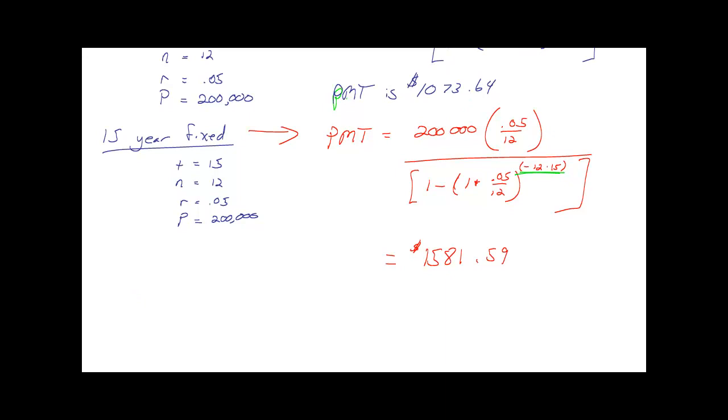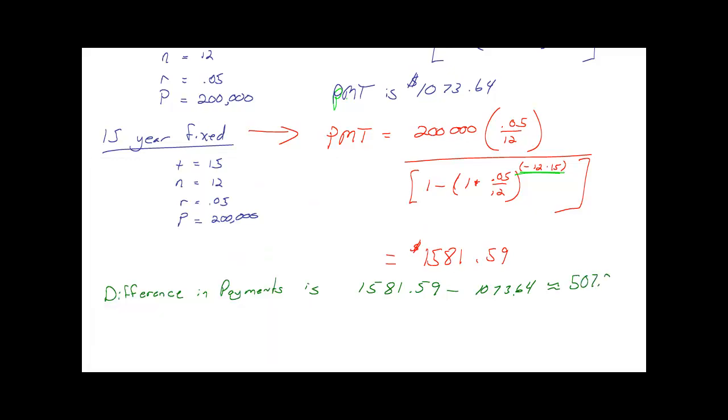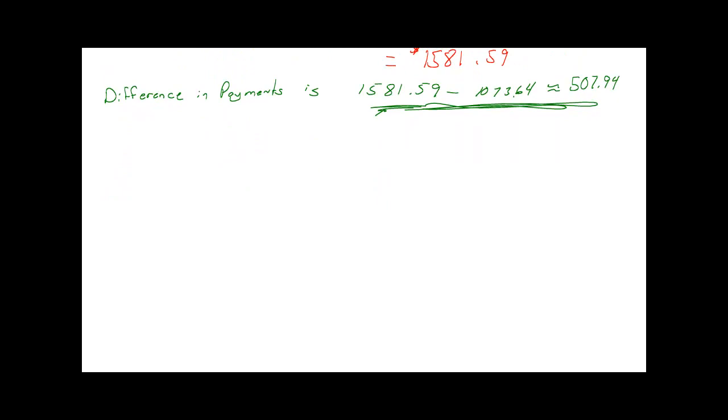From an eyeball, it's about a $500 difference. The actual difference in payments is $1,581.59 minus $1,073.64, which is approximately $507.95. If you're comparing the two loan products and can swing an extra $500 every month, that might be more beneficial as you're going to be paying less interest over the life of the loan. But how much less are you actually paying?